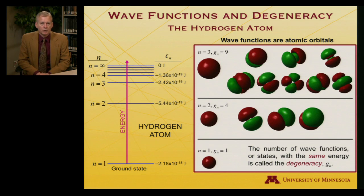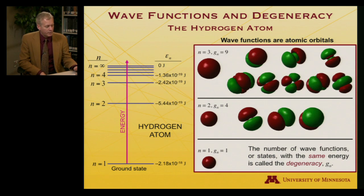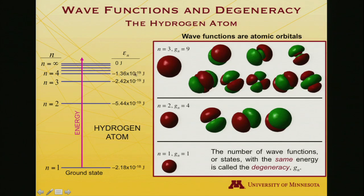That's called degeneracy. So when there are multiple solutions to the Schrödinger equation, all with a common energy, we say that those solutions are degenerate. So given that there are four possible solutions, the degeneracy is four, and we often index degeneracy by g, and again a subscript to say which level. If we go up to the third allowed energy level, or the third quantum level sometimes we would say, now it turns out that there are nine orbitals, or wave functions, that satisfy the Schrödinger equation that all have that energy. So the degeneracy is now nine.